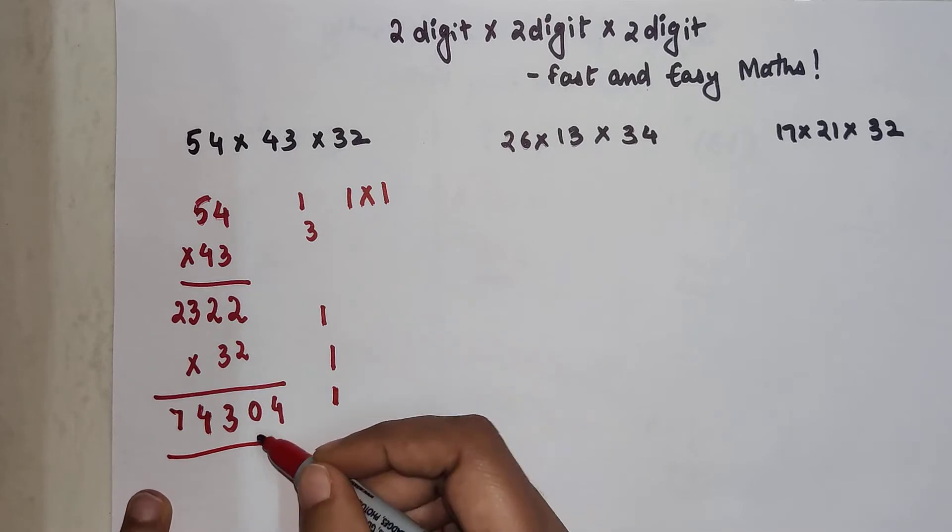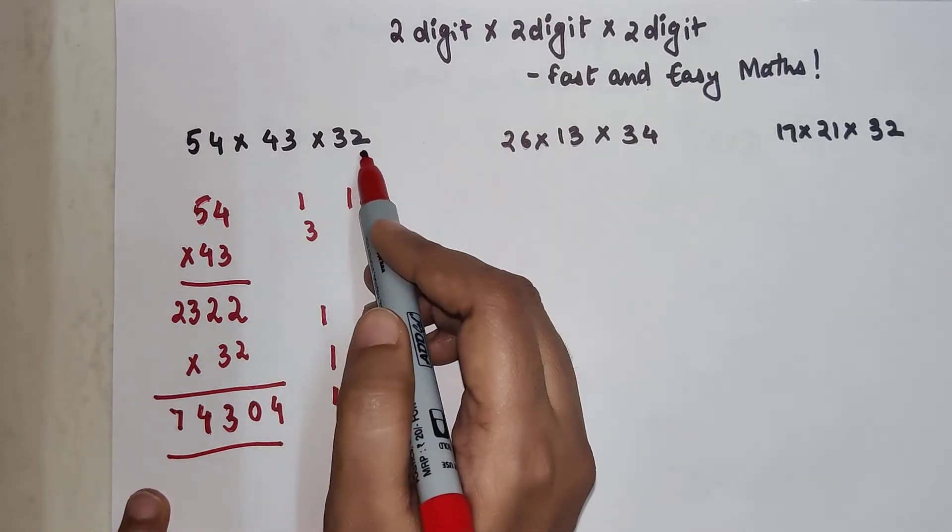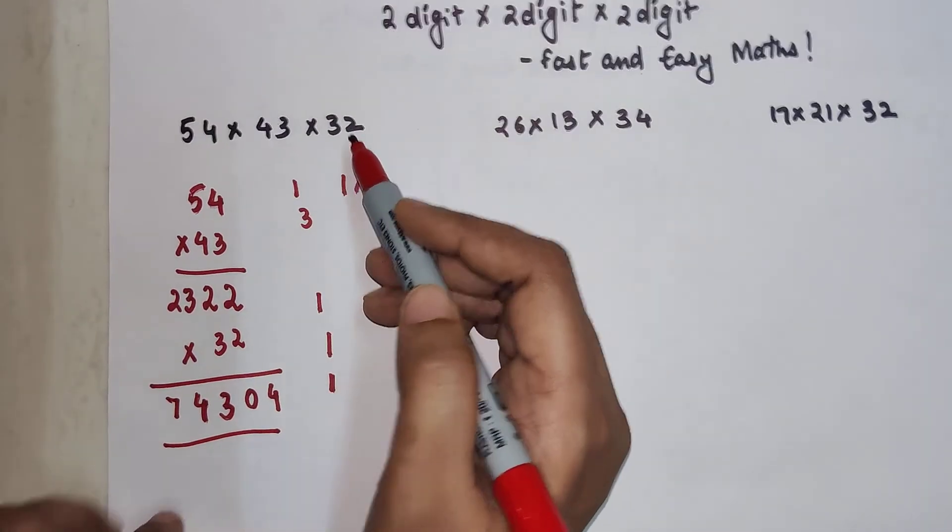So this is your answer of 54 into 43 into 32.